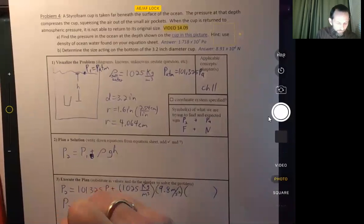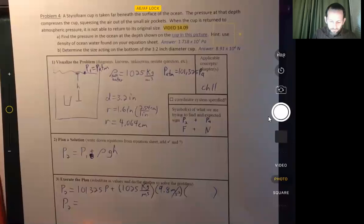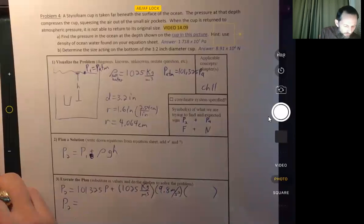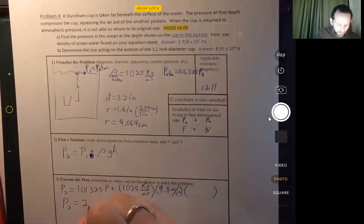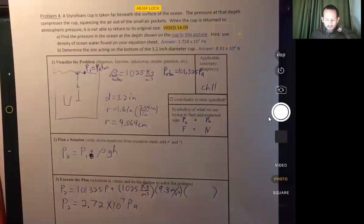And so we get a pressure and it comes out to be, let's see, let's count one, two, three, four, five, six, seven. So that's 2.72 times 10 to the seventh pascals.